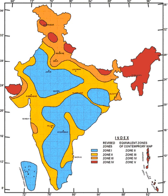The MSK intensity broadly associated with the various seismic zones is VI or less, VII, VIII, and IX for Zones 2, 3, 4, and 5 respectively, corresponding to the Maximum Considered Earthquake. The IS code follows a dual-design philosophy: under low probability or extreme earthquake events, the structure damage should not result in total collapse; and under more frequently occurring earthquake events, the structure should suffer only minor or moderate structural damage.